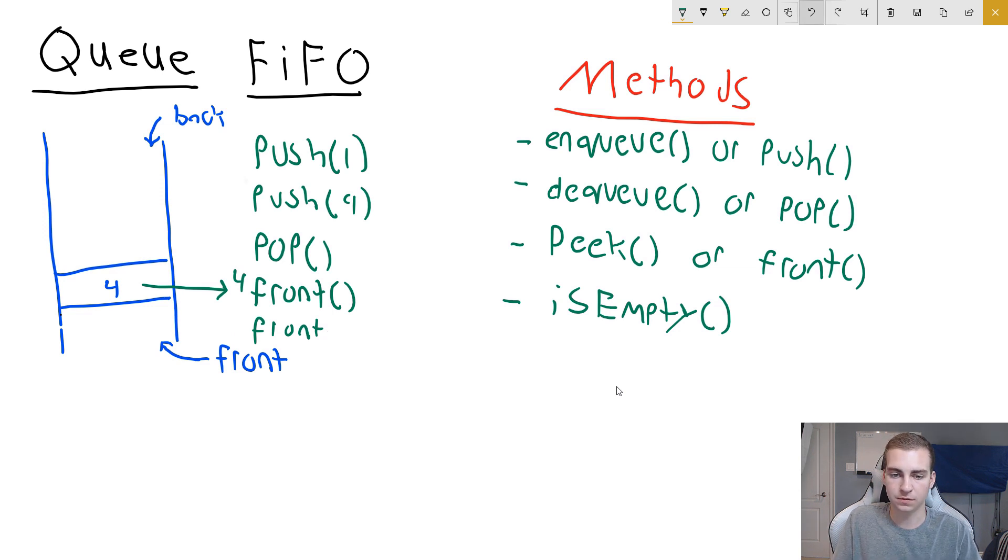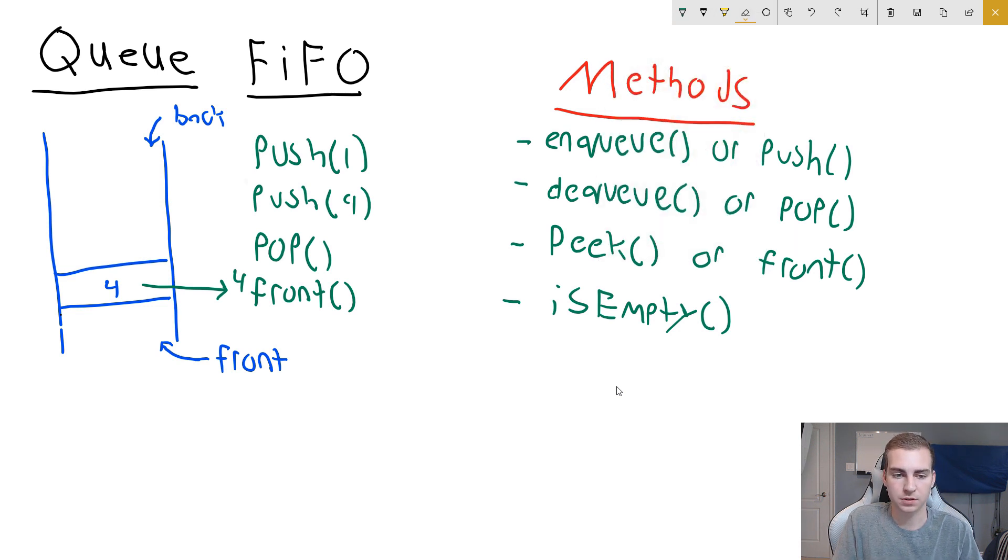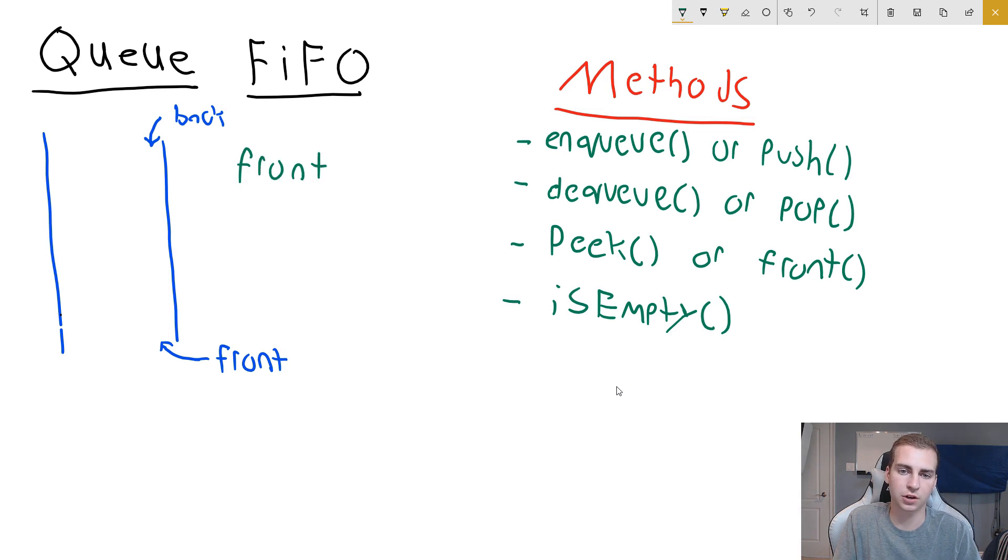Now let's show the last method, which is isEmpty. Now if you try to remove an item from a queue and that queue is empty, you're going to run into some errors. So let's say we have an empty queue and we want to pop off the front item. So if we try calling front like this, or we can even try pop, if we try to do one of those and there's nothing in our queue, we're going to run into an error.